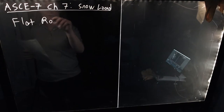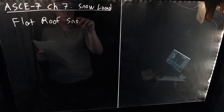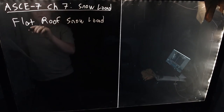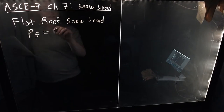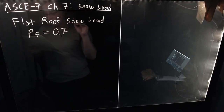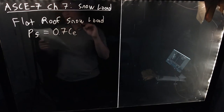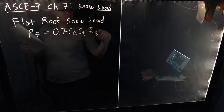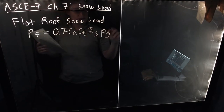So let's first look at the flat roof snow load. This is our first quantity that we need to be aware of when calculating snow load. The flat roof snow load formula is: PF equals 0.7 times our coefficient CE times our coefficient CT times IS times PG.